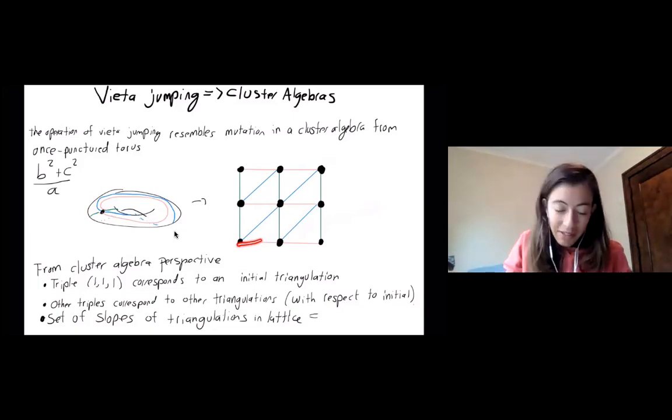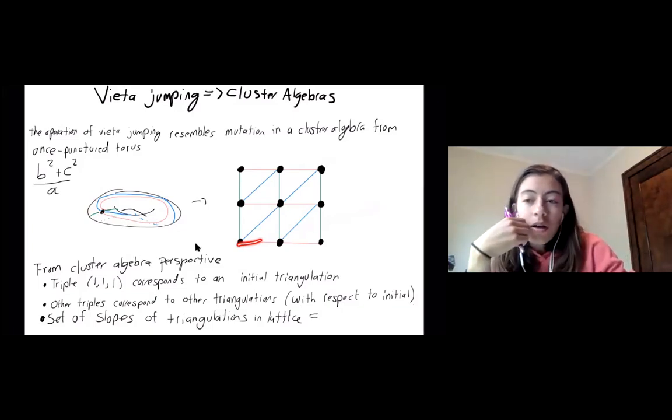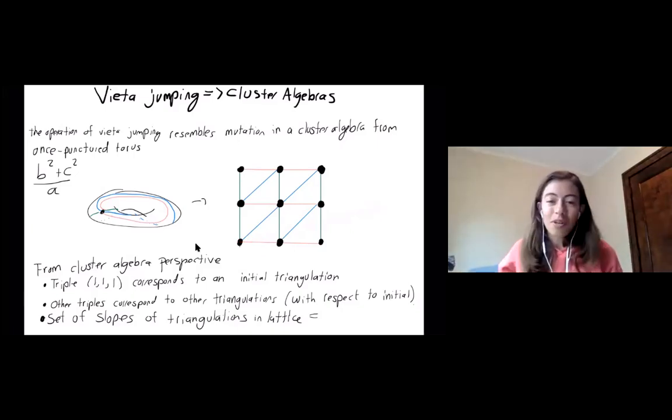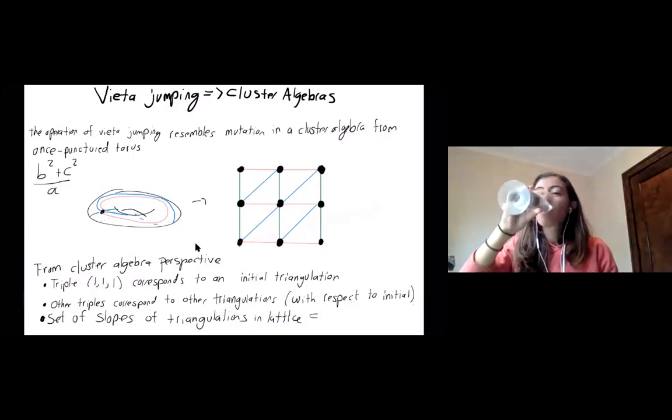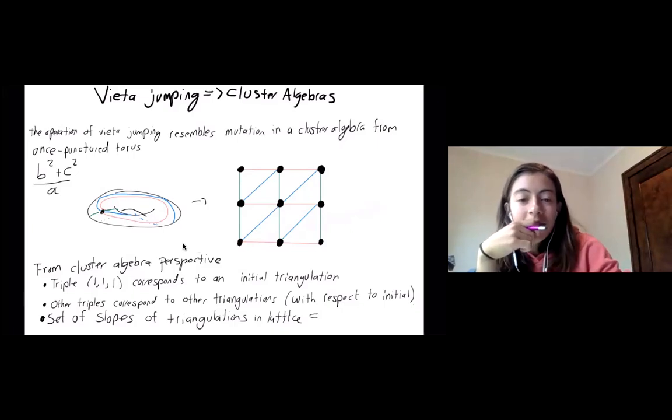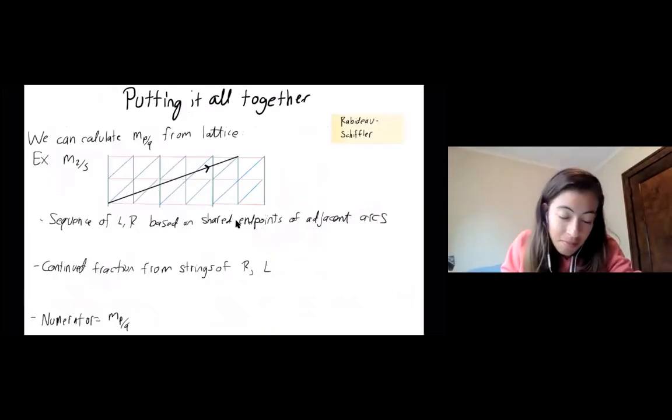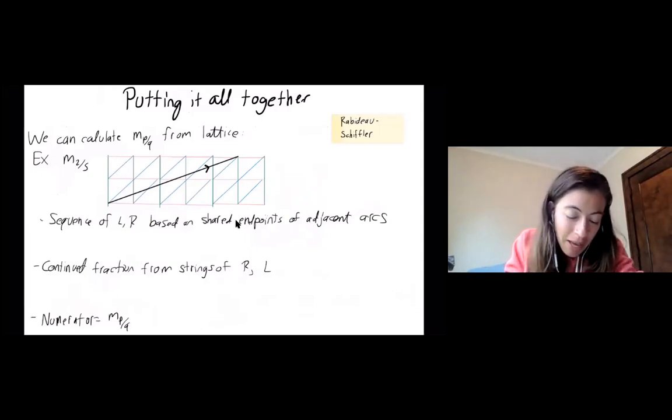So now we're going to do a real life example. Okay, so again, we were going to work on two five. Once my, sorry, my screen's catching up. So maybe everyone can take a breather. My internet also sometimes is not great. Okay, great. Yeah, maybe the breather was good. Okay, so we'll calculate M two five.